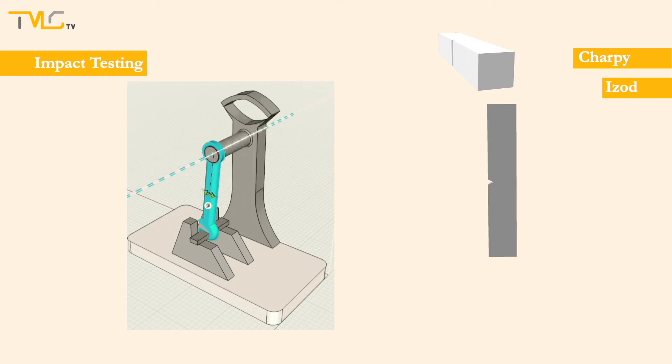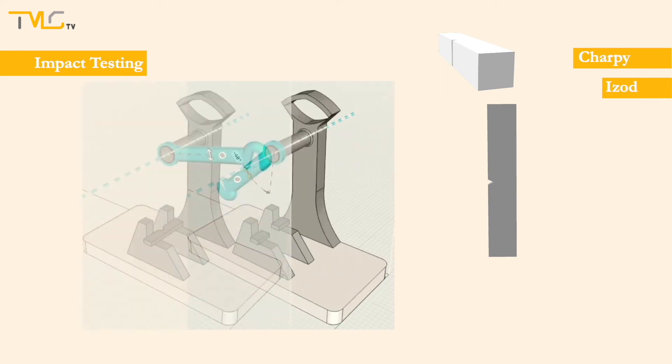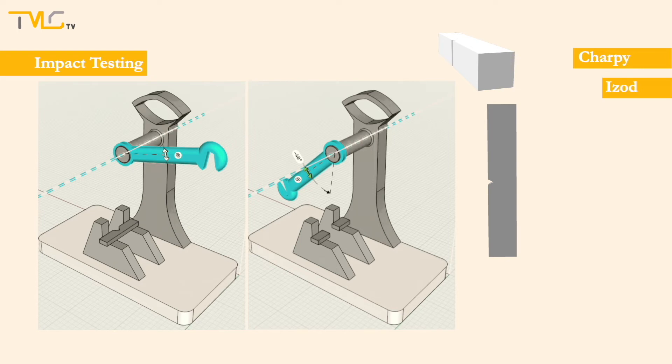After the fracture, the hammer rises up to a certain height, which is lower than the initial one. This height difference gives the amount of energy absorbed by the specimen during fracture, and is called the notch toughness of the specimen.